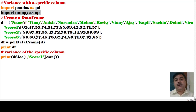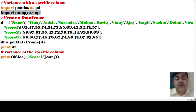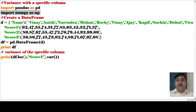We have a name column with character variable combinations. Next is score1, which holds different numeric values. Then score2 is given, and score3 is also given. For variance calculations, we must have numbers — we cannot calculate variance on character-type variables like the name column. So score1, score2, and score3 are numeric. Then df equals pd.DataFrame(d) calls that data frame structure.